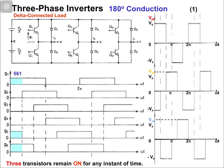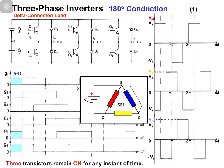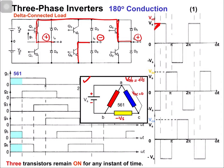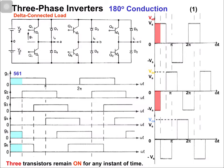In the first interval, switches 5, 6, and 1 are in the on state. Because of switch 1, phase A is connected with the positive terminal. Because of switch 6, phase B is connected with the negative terminal. Because of switch 5, phase C is connected with the positive terminal. From the equivalent circuit, vab = +Vs, vbc = -Vs, and vca = 0.